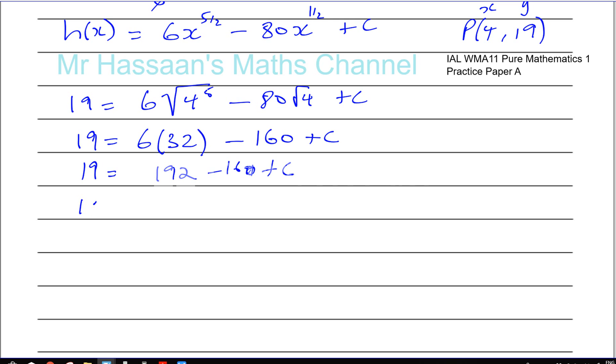So there we can now finish off the question. We have 19 is equal to, 60 plus 32 will give you 92, yes, plus C.